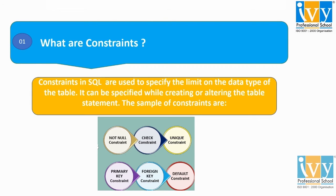In other words, we can say SQL constraints can be at a column or a table level. Column-level constraints apply to specific columns in a table and do not specify a column name except the CHECK constraint — that is, they refer to the column that they follow. The names are specified by the table-level constraints of the column to which they apply.